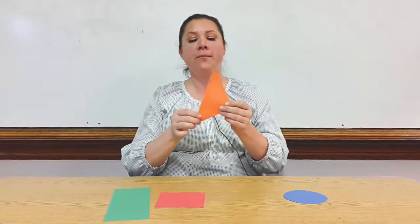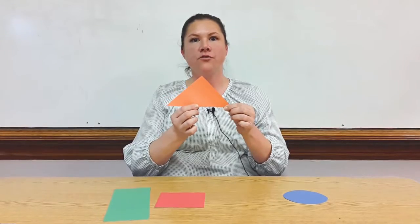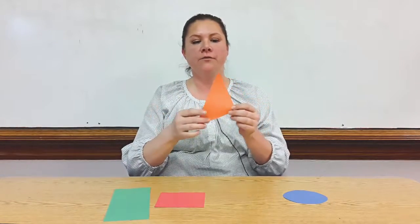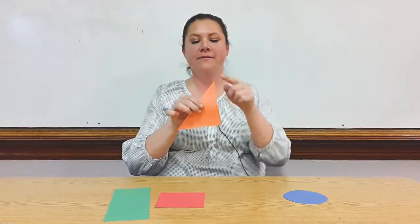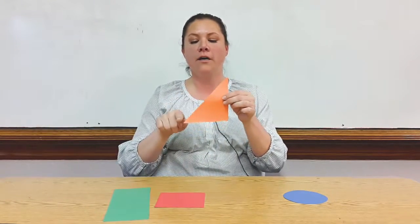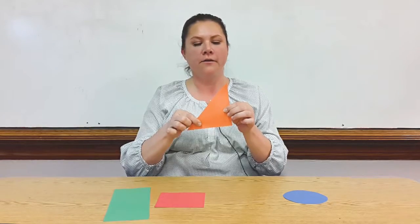Then I pick up the next shape and say, boys and girls, this is a triangle. What shape is it? It's a triangle. Triangles have three sides. Can you count the sides? Let's count. One, two, three. This is a triangle. Then have the kids look around to see if they can find any triangles in their environment.